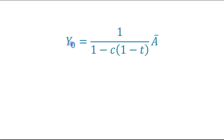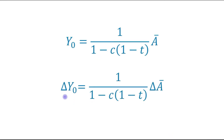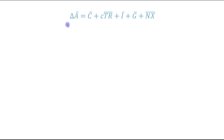We have studied this equation in this chapter: the equilibrium level of income equals the multiplier times the autonomous spending. We can write it as: change in equilibrium level of income equals the multiplier times the change in autonomous spending. This change in autonomous spending equals autonomous consumption plus MPC times transfer payments plus investment expenditure plus government expenditure plus net exports.